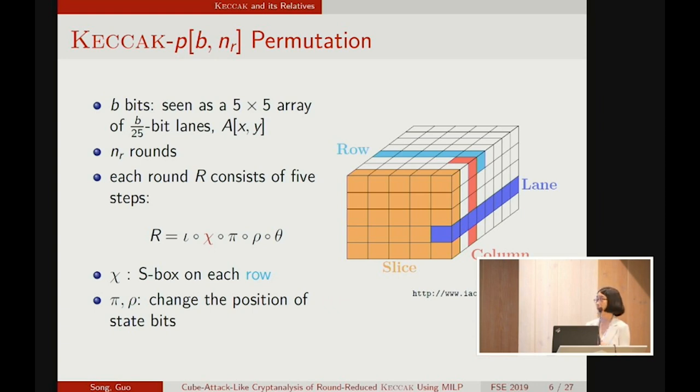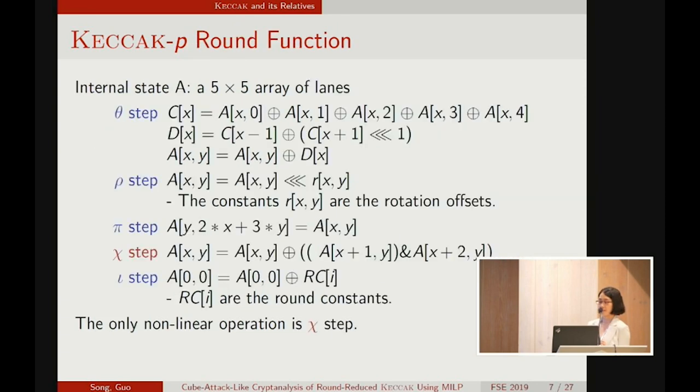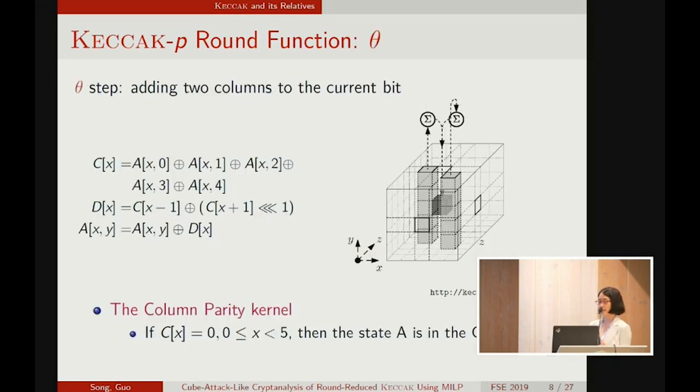Its round function has five steps: theta, rho, pi, chi, and iota. Chi applies an S-box on each row, and pi and rho just change the position of state bits. The mathematical expression of the round function is listed here.